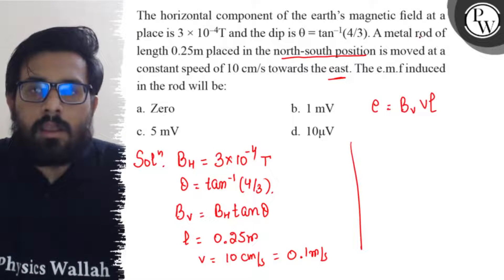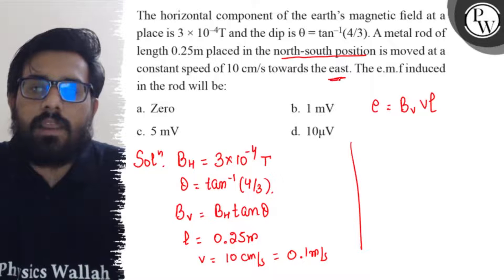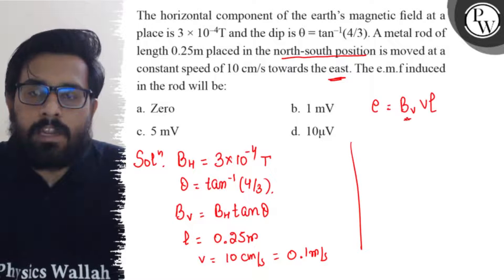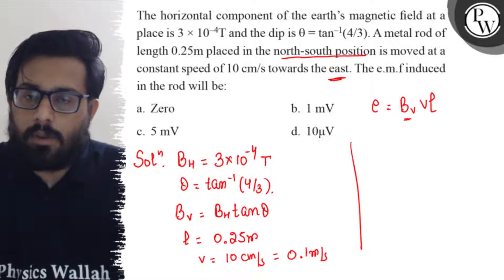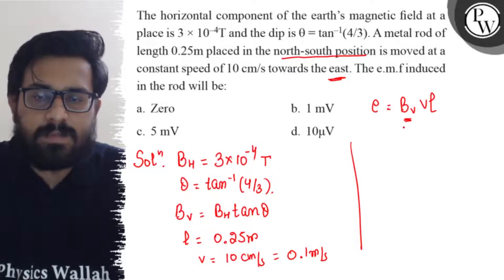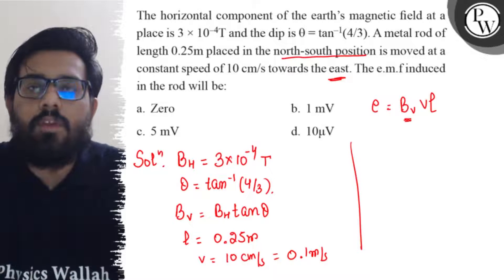So if the rod is placed in the north-south direction and it is moving in the east direction, you will consider that the vertical component of the magnetic field. So this rod cuts the vertical component of the magnetic field and just because of that, we consider this BV over here.